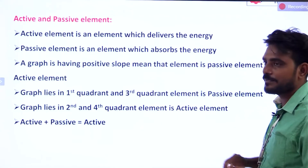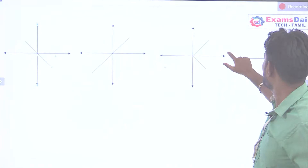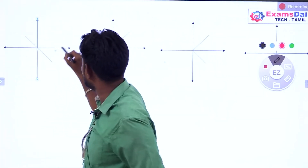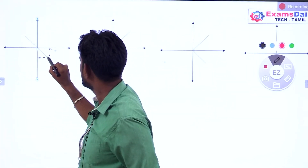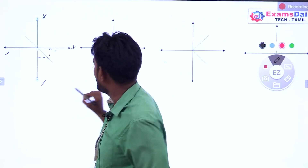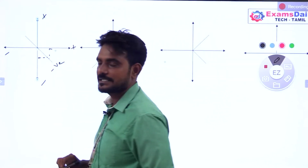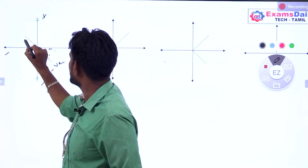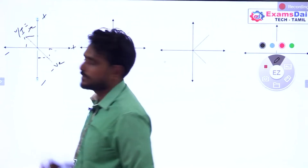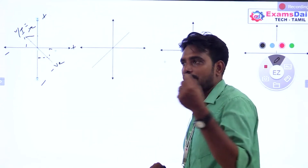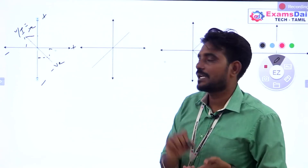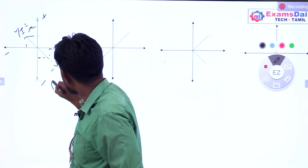So, our graph — positive slope, negative slope. Look at it: positive side and negative side means negative slope. One value negative is negative slope. That's the first quadrant and third quadrant — it is positive slope, so passive element. Otherwise negative slope — so what is the element? Active element.